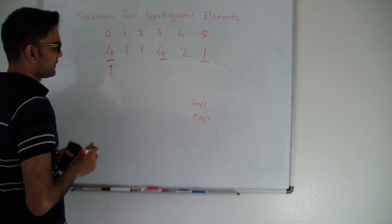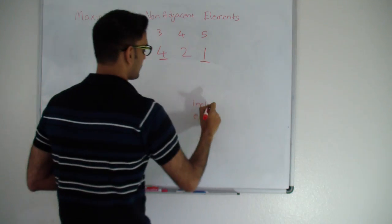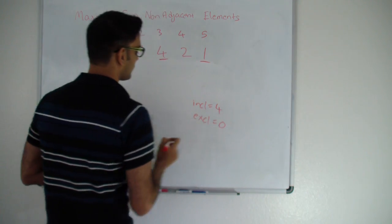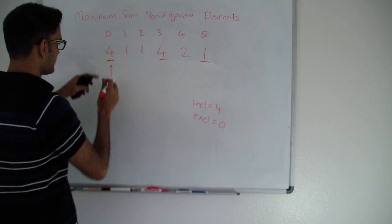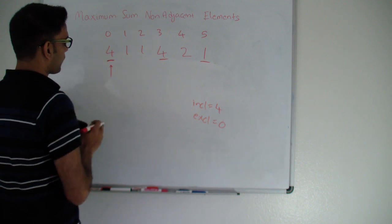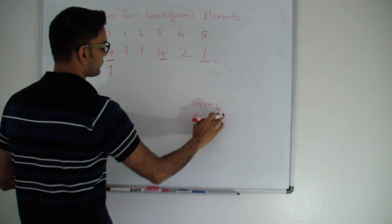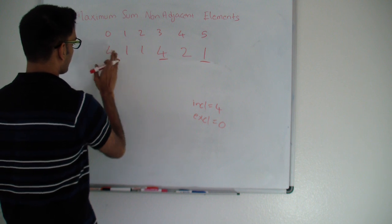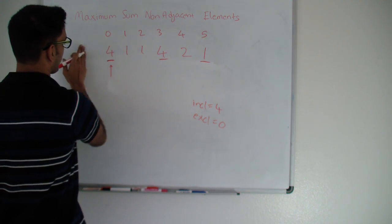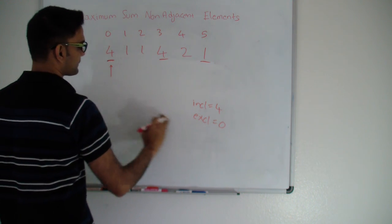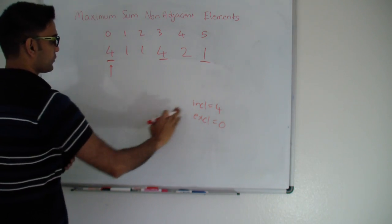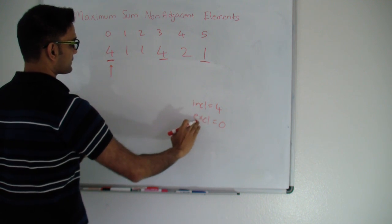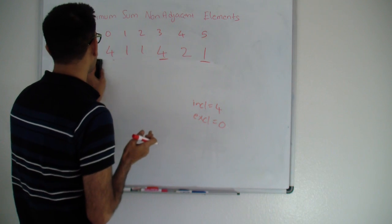When i is 0, my inclusive is 4 and my exclusive is 0. It means that including 4, the maximum sum I can have up to this point is 4, and excluding 4, the maximum sum I can have before it is 0. So we initialize inclusive as the first element and exclusive as 0.